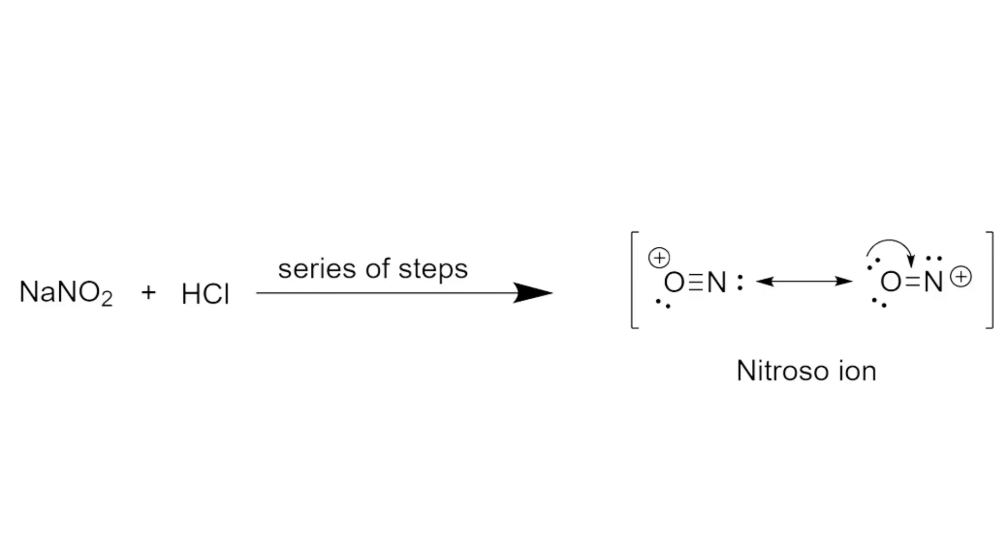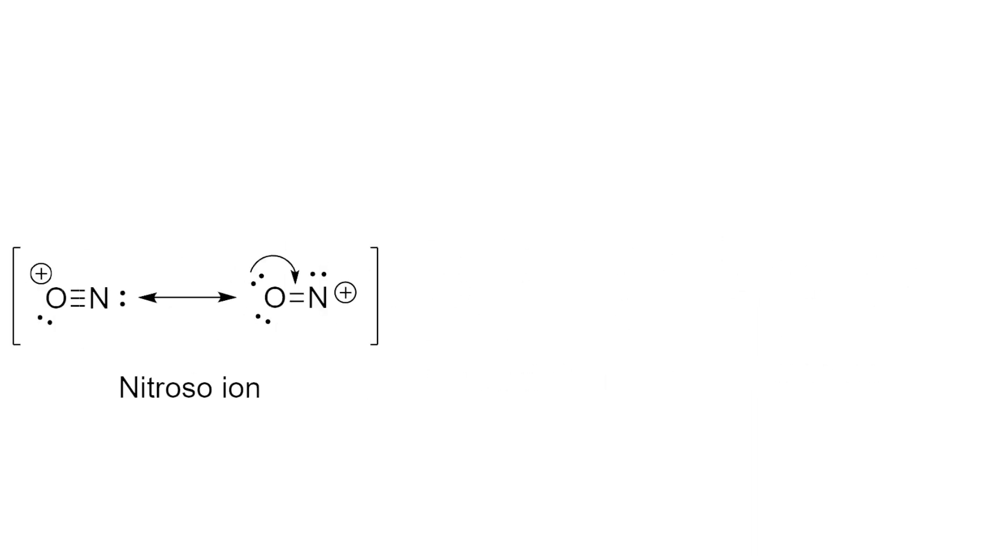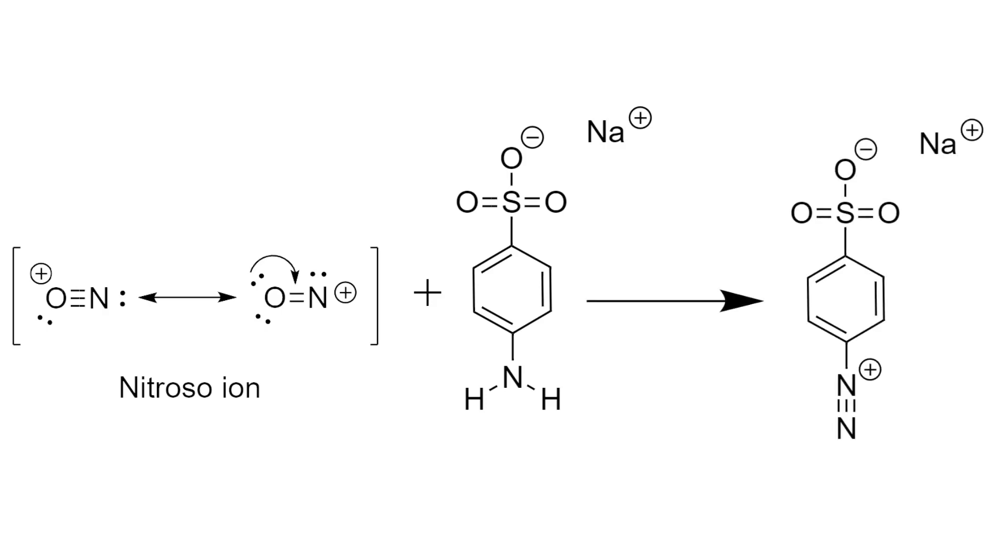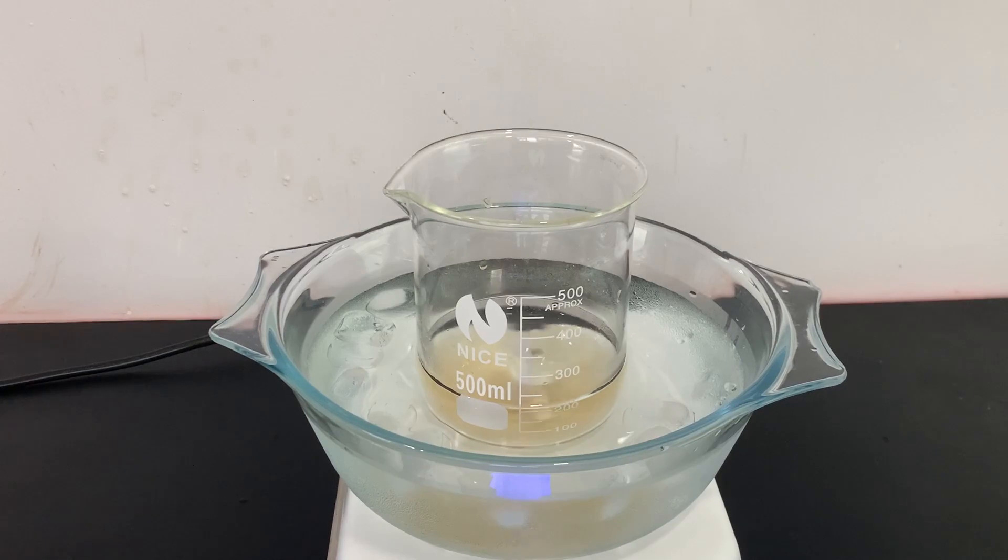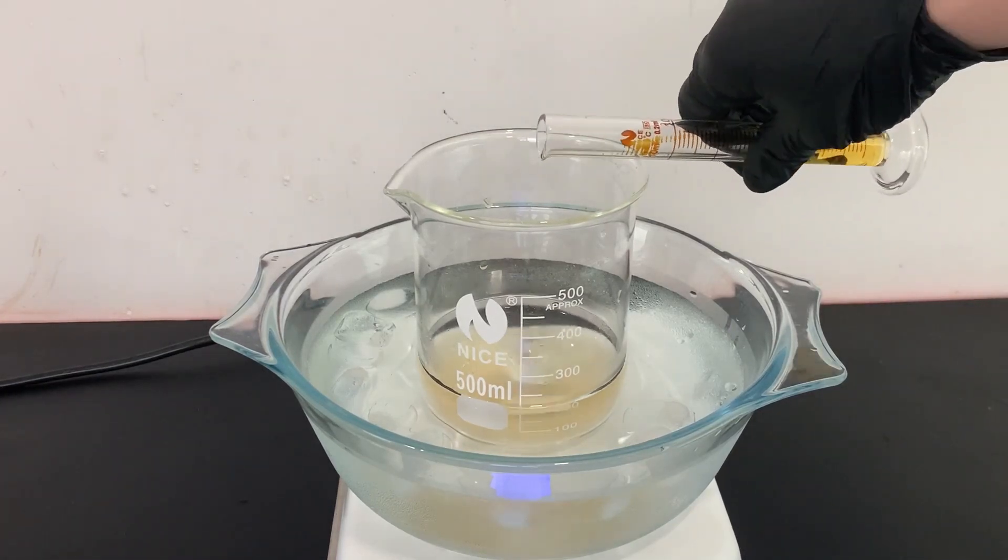The reaction happening here is that firstly, the sodium nitrite reacts with the hydrochloric acid in a series of steps to produce the nitroso ion. The nitroso ion then reacts with the sodium sulfonylate to produce the diazonium salt.